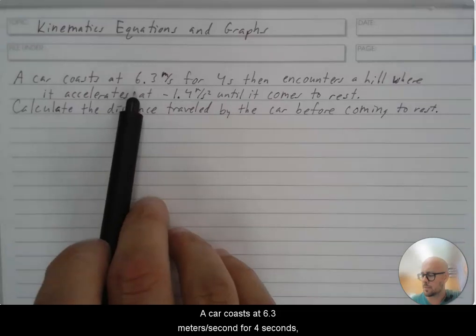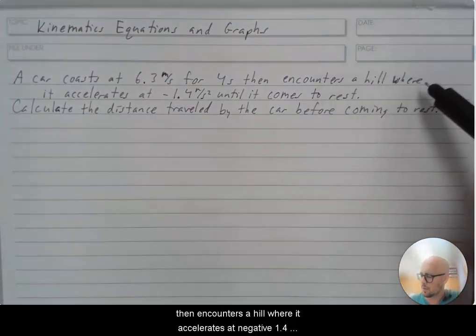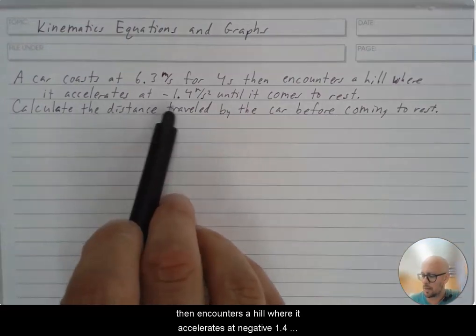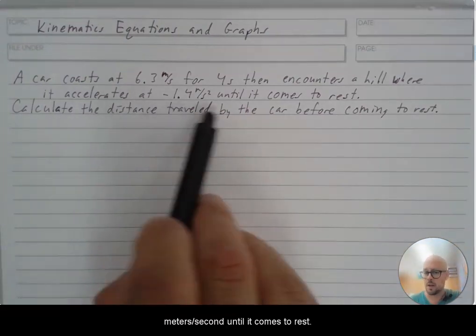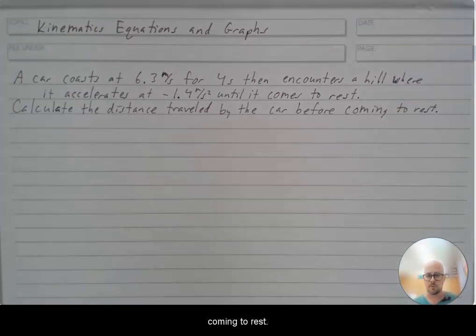A car coasts at 6.3 meters per second for four seconds then encounters a hill where it accelerates at negative 1.4 meters per second squared until it comes to rest. Calculate the distance traveled by the car before coming to rest.